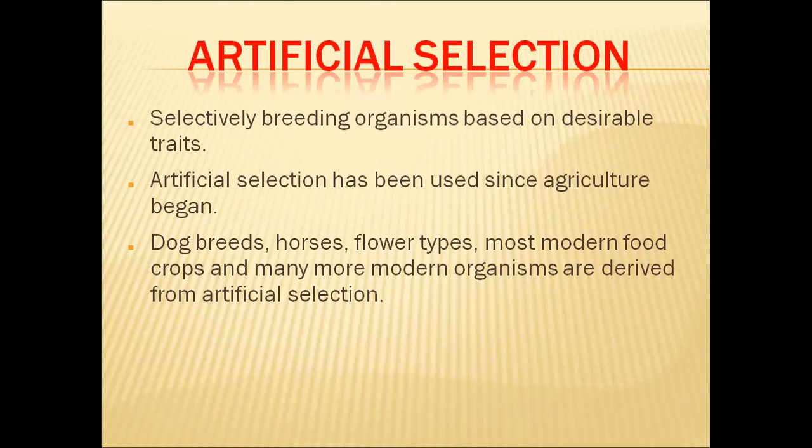In case of human beings, we select the organisms that we grow, be it animal or plant. We select the animal depending on our needs and desires. So the selection here is made by human beings — that is called artificial selection.